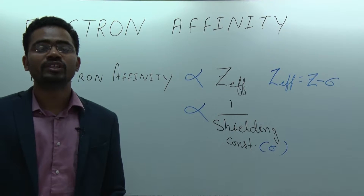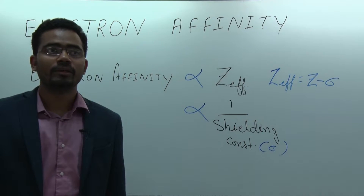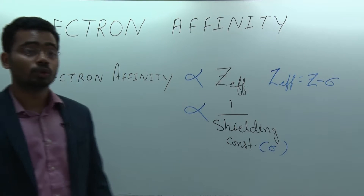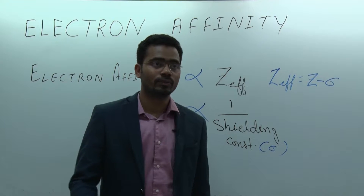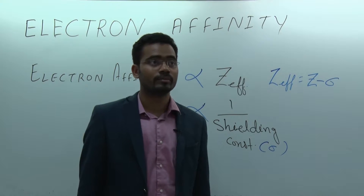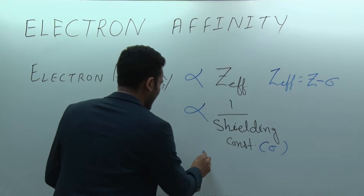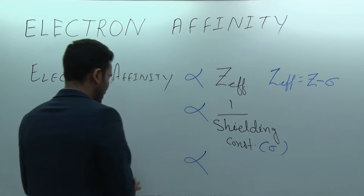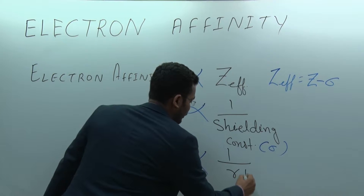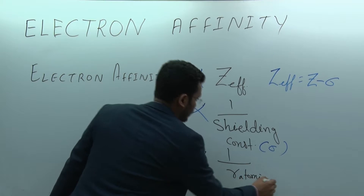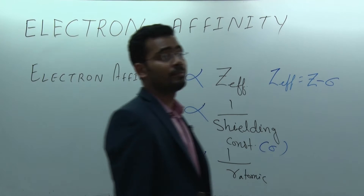If size increases, electron affinity will decrease. Why? Because electron affinity is inversely proportional to R atomic, the atomic radius. So these are the three factors which affect electron affinity: Z effective, shielding constant sigma, and atomic radius.